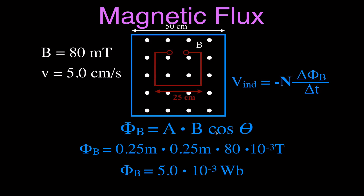Just to remind you: cosine theta, the angle is 90 degrees. The cosine of 90 is 1, so we could put times 1, but generally we leave that off. This is the magnetic flux at time zero, at the start.